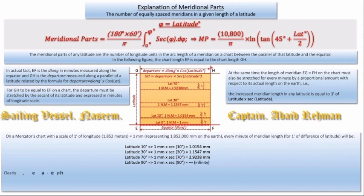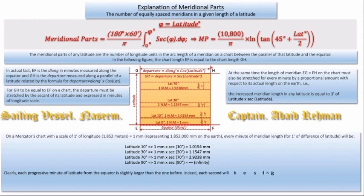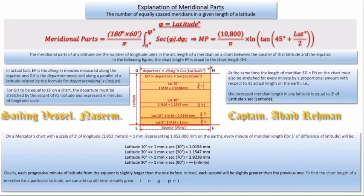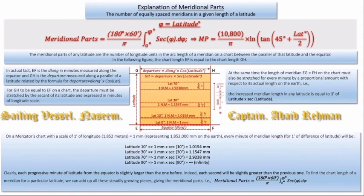Clearly, each progressive minute of latitude from the equator is slightly larger than the one before. Indeed, each second will be slightly greater than the previous one. To find the chart length of a meridian for a particular latitude, we can add up all these steadily growing pieces — that is the meridional parts.